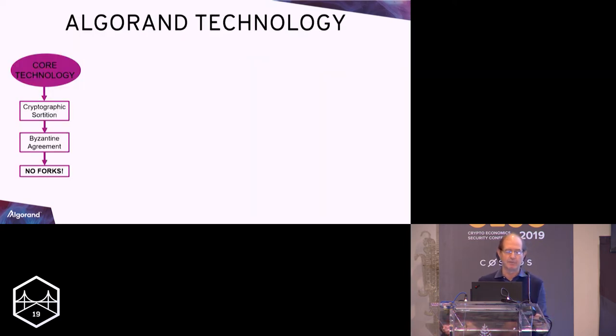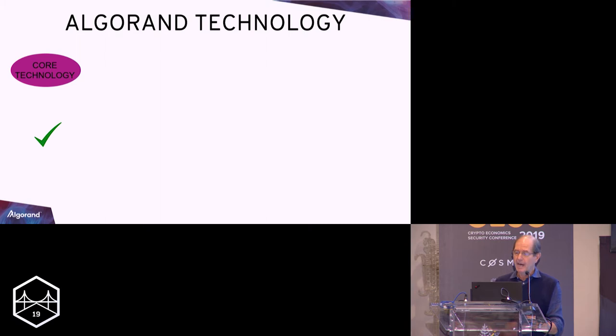So far this is a recap of what is the core technology. There is more of course that I could summarize in these 10 minutes. But one thing that is important is that by proceeding in this manner, the Algorand blockchain does not fork. Happy with this, what is coming?